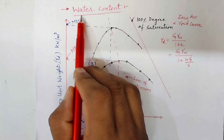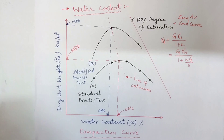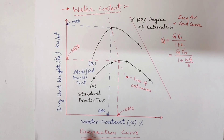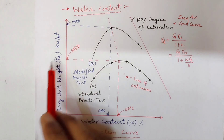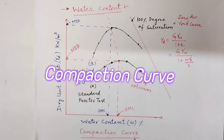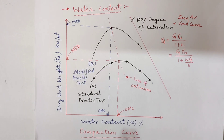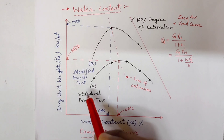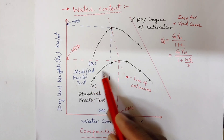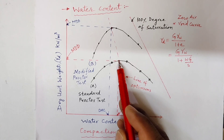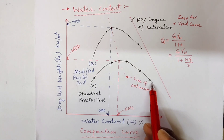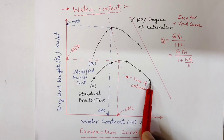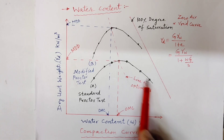What will be the effect of water content on compaction? Usually, to show the effect of water content, we plot a graph between water content and dry unit weight of the soil. This curve is called the compaction curve — water content on the x-axis and dry unit weight on the y-axis. The graph initially increases up to a certain limit, after which it starts decreasing as water content increases.